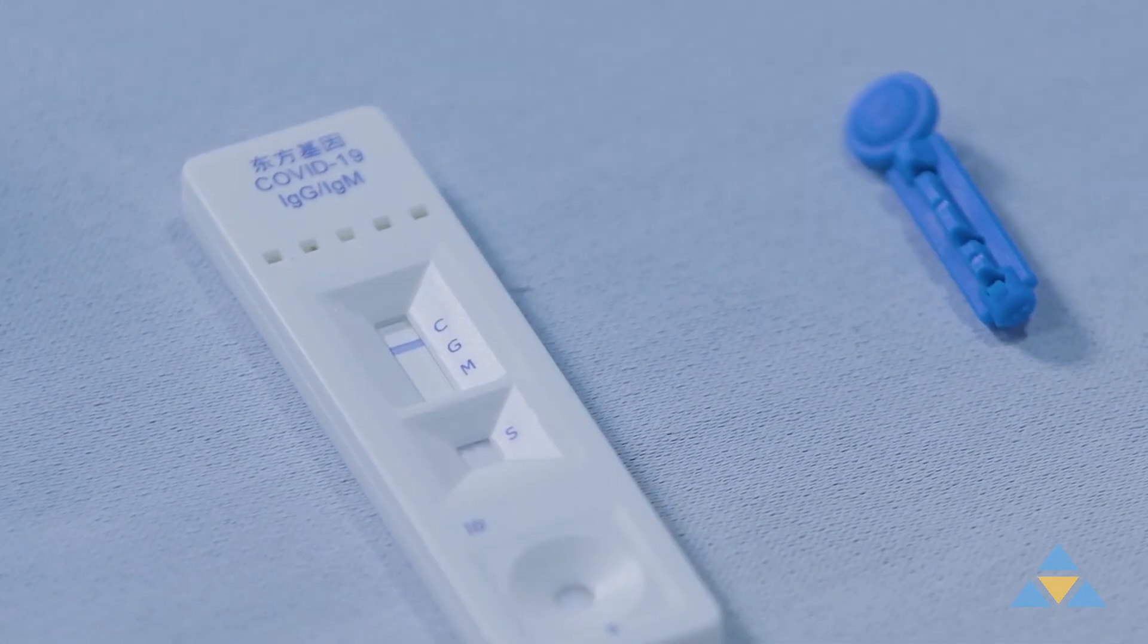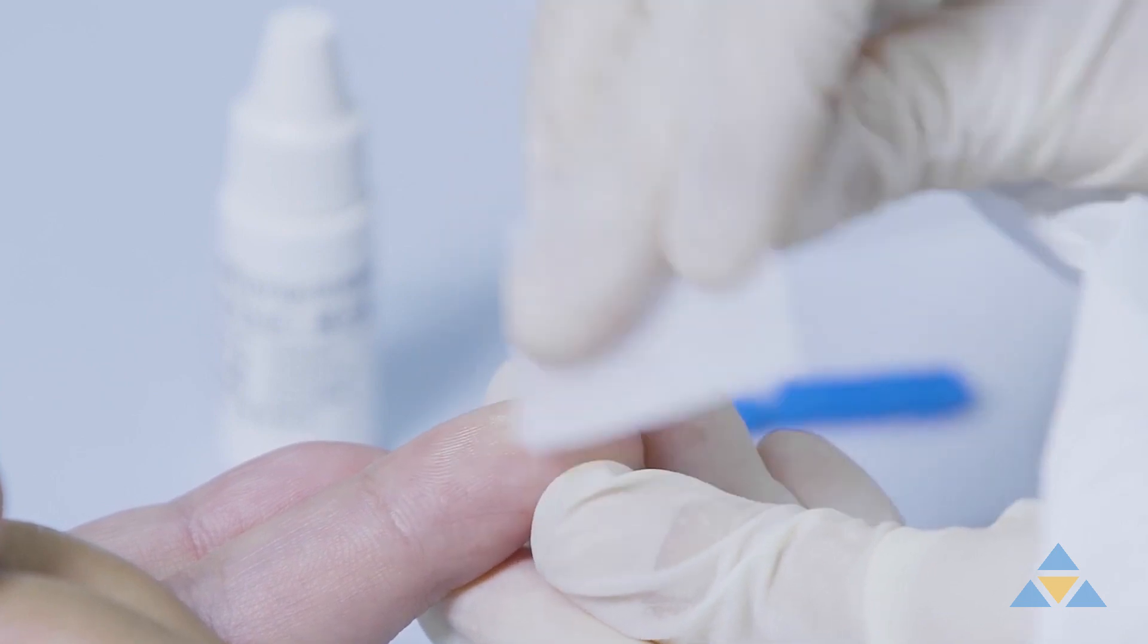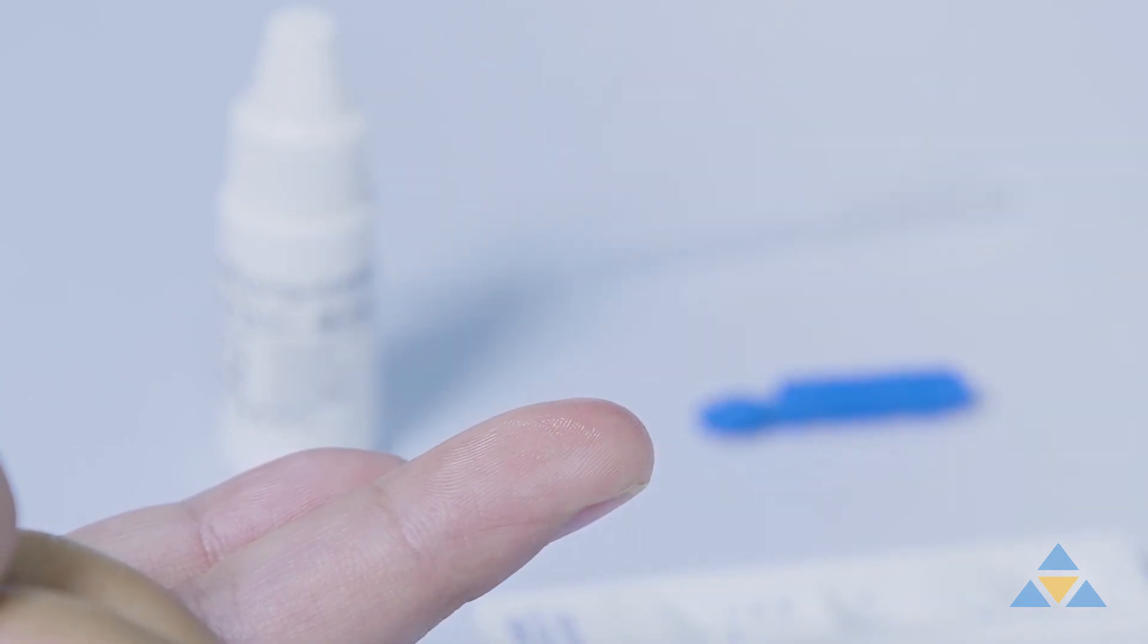Tear open the foil pouch and place the test cassette on a clean and level surface. Wipe and disinfect your fingertip with an alcohol pad before taking a blood sample.